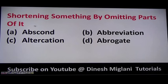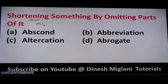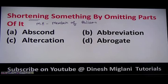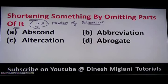The next question is: shortening something by omitting parts of it. For example, in English, MP stands for Member of Parliament — the full form is Member of Parliament. If I want to write it in a short way, I write only MP. So that is shortening something by omitting parts of it, which is abbreviation. The answer is B.